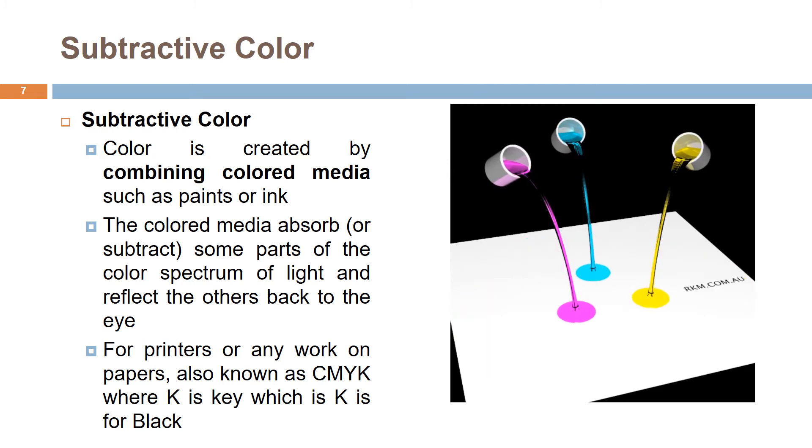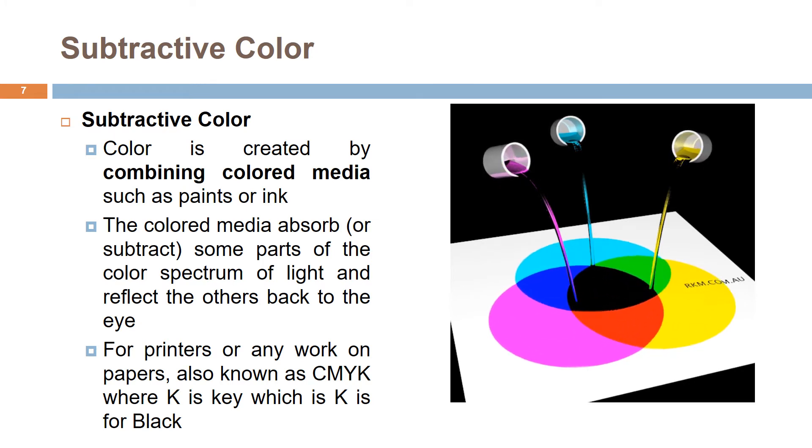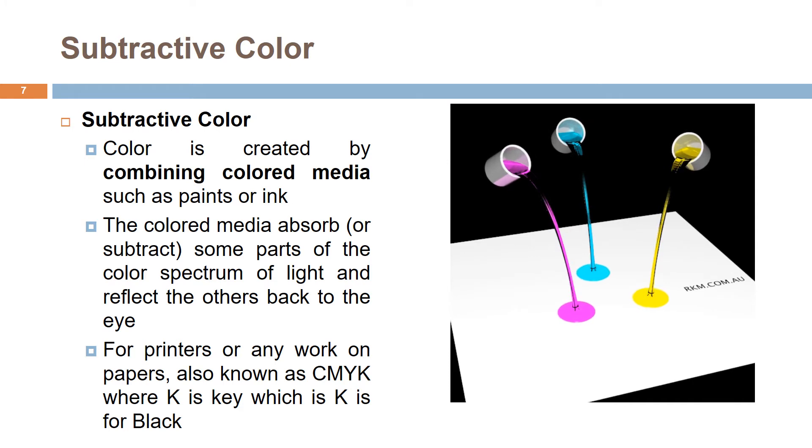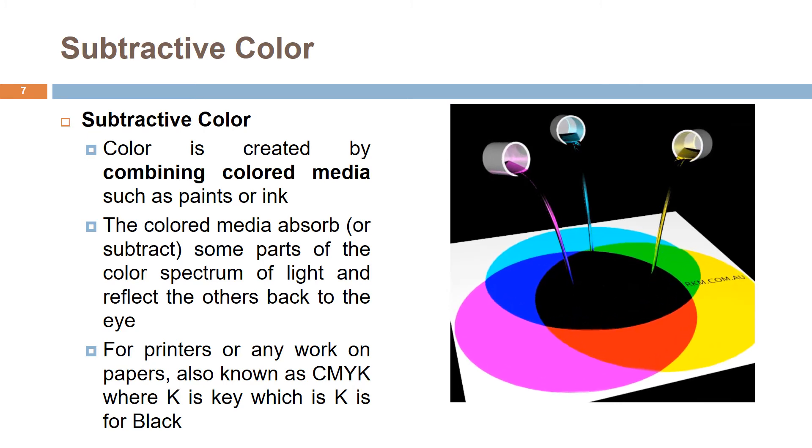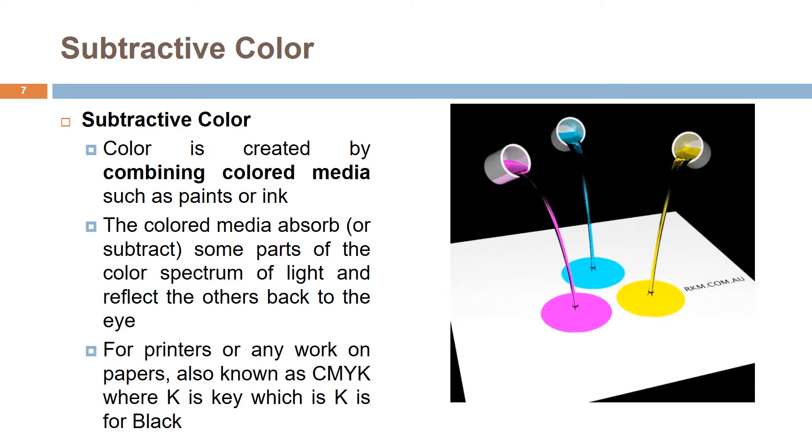Ink or paint subtracts from that white to produce the colors you see. The printed page consists of tiny halftone dots of three primary colors: cyan, magenta, and yellow, also known as CMYK where K is for black.